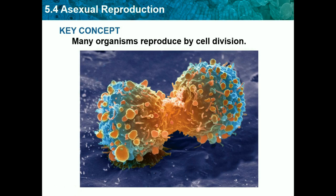Hello, this is Josh Patel, a perfect scorer on the Biology EOC, and today we will be going over Chapter 5, which is all about cell division and cell growth, Lesson 4, which is Asexual Reproduction. Our key concept is: many organisms reproduce by cell division.